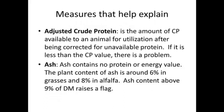Some other measures on a forage test help explain why there may be differences between forages or differences in energy values. Adjusted crude protein is the amount of crude protein available to an animal for utilization after being corrected for unavailable protein. Generally, we'd like adjusted crude protein and crude protein to be the same. But if adjusted crude protein is less than the crude protein value, that indicates a problem — most generally, some type of heating has occurred, so that protein will not be totally available to the animal.